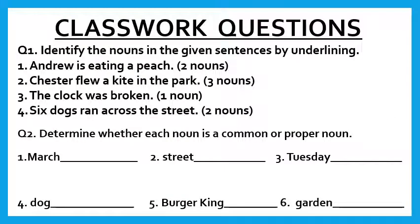I have planned some classwork questions for you. Please bring your pencils and notebooks and start doing with me. Question 1: identify the nouns in the given sentences by underlining. In the first sentence — Andrew is eating a peach — there are two nouns. Question 2: Chester flew a kite in the park — there are three nouns. The clock was broken — there is only one noun. Six dogs ran across the street — there are two naming words. Question 2 is to determine whether each noun is a common or a proper noun.